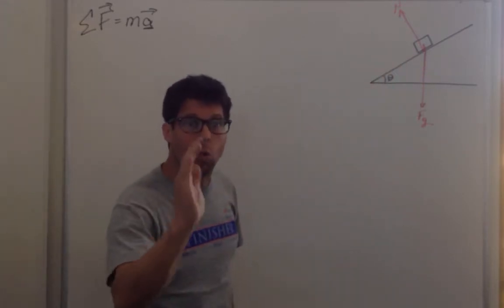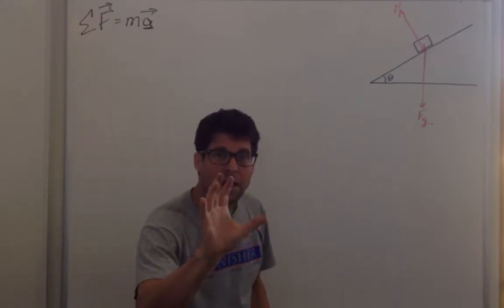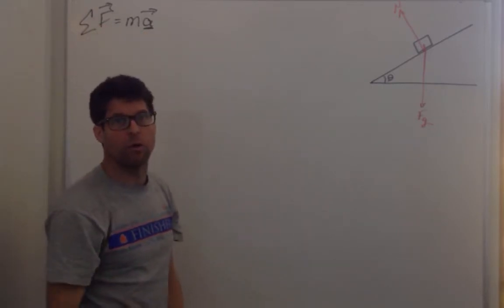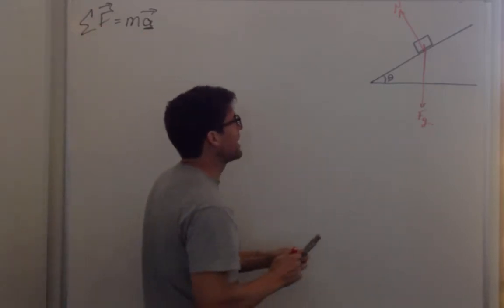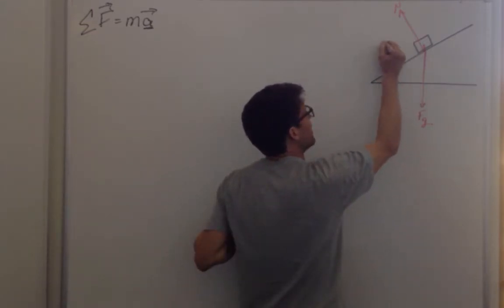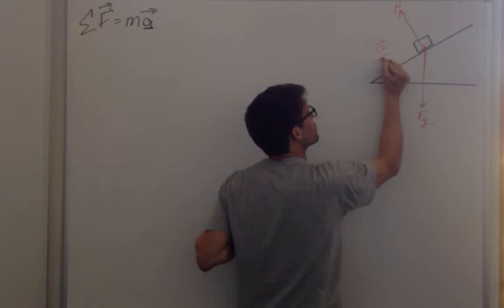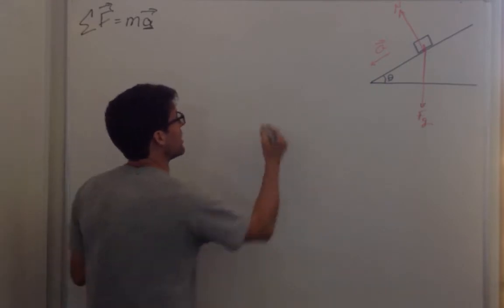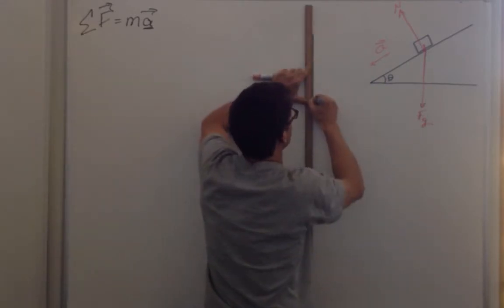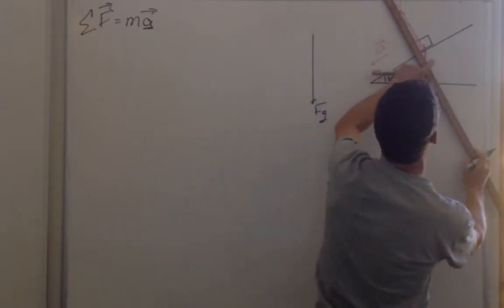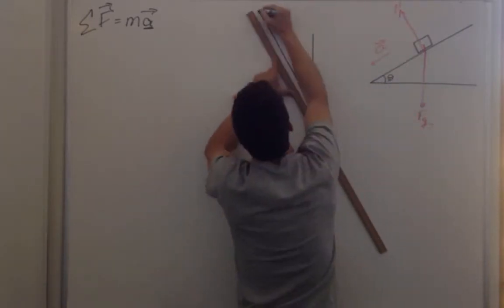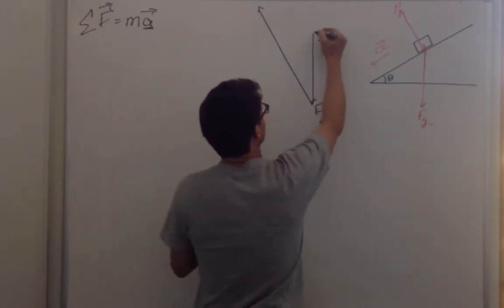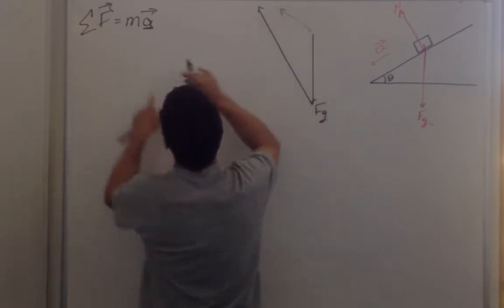It's accelerating. So what is the direction of the acceleration? Because I know the direction of the acceleration has to be in the same direction as the sum of the forces. I saw it accelerate down the slope in this direction. So now I'm ready to graphically add these vectors.